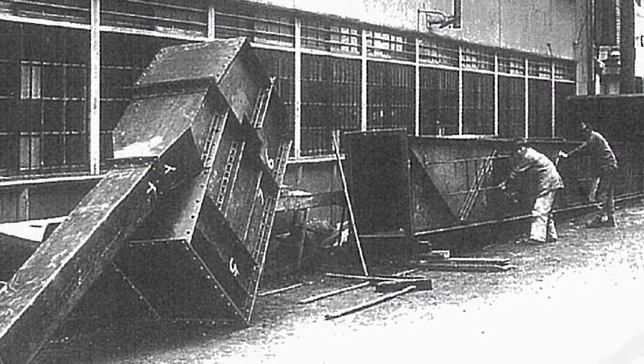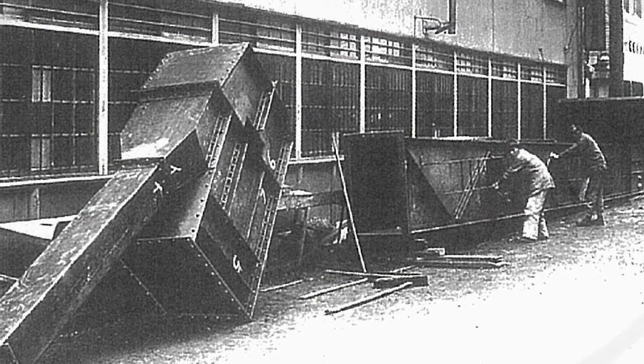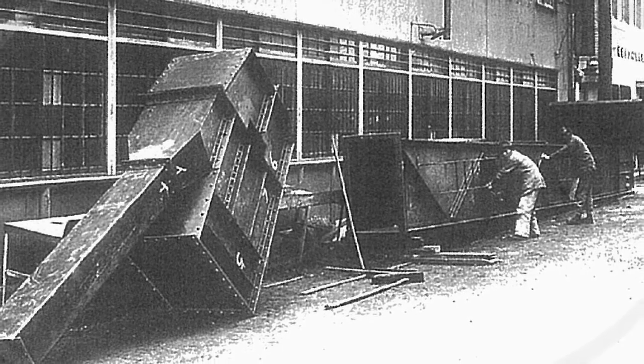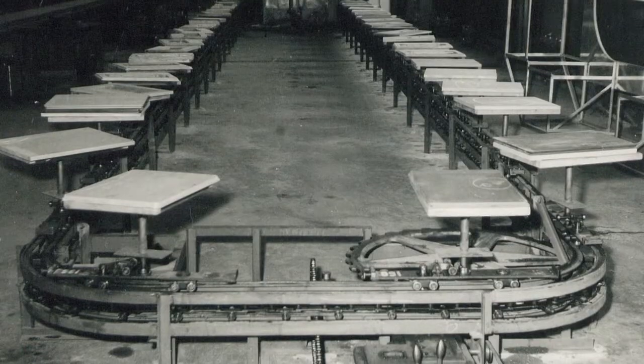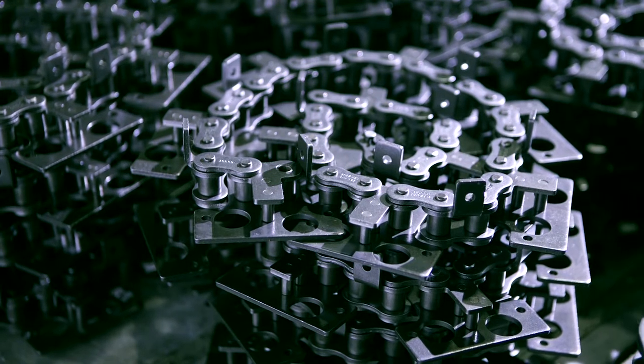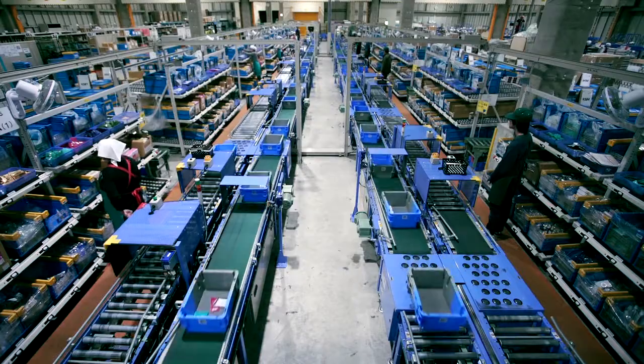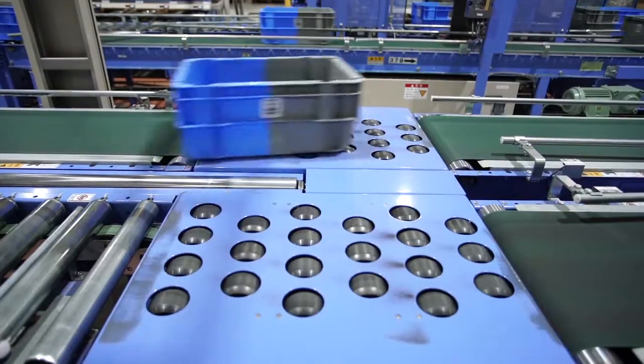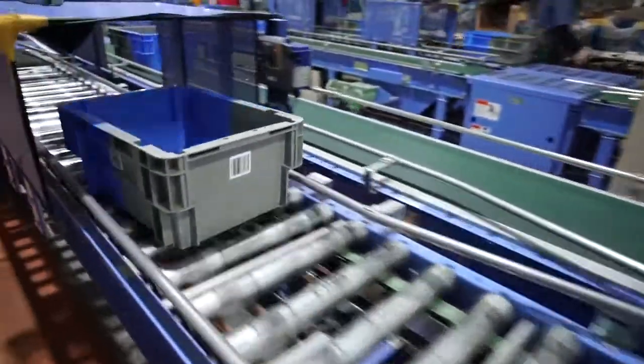In 1937, Tsubaki's materials handling systems operations began with the delivery of a complete set of large-scale conveyor plant equipment. By developing chain technology, Tsubaki controls the flow of goods and information, be it through conveyance, sorting or management systems.